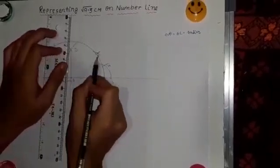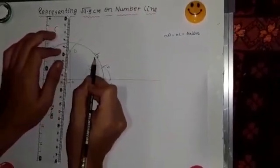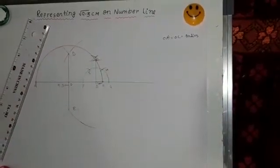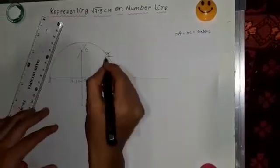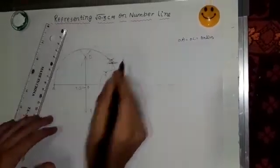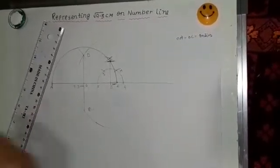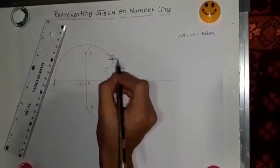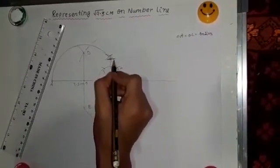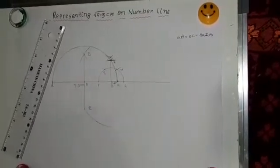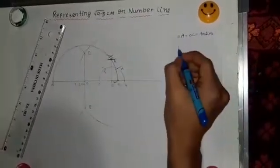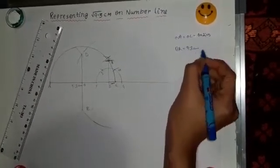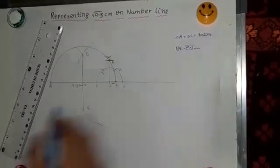So you will see it intersect on the semicircle at the point here you can see. I will just make it over here at this point, name it R. So BR is equal to 9.3 cm or you can just say root 9.3 cm.